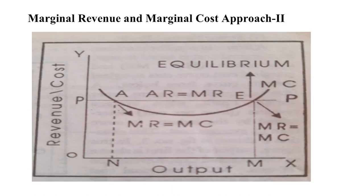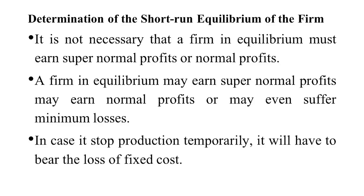On the graph, the Y-axis shows revenue and cost, and the X-axis shows output. When the price is OP, output is ON, and marginal cost is greater than MR — this is not the equilibrium condition. At point E, the equilibrium point, MC equals MR and the MC curve cuts the MR curve from below. Both conditions are fulfilled at point E. This is the marginal revenue and marginal cost approach.